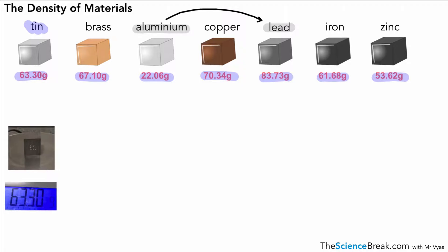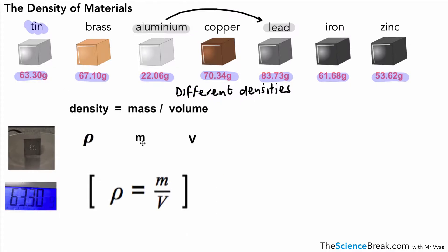What we call this feature, when we have different masses for the same volume, is we say that they have different densities. The densities are all different for each of these different metals. We can work out the density using an equation. So our equation looks a little something like this: density is mass divided by volume.